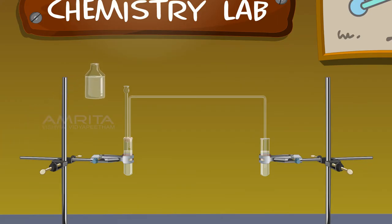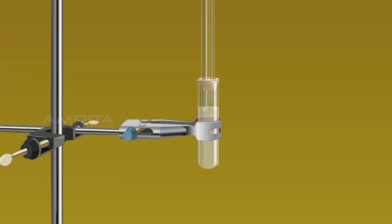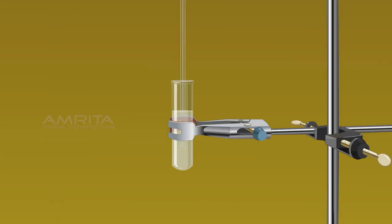Pour the acetic acid through the thistle funnel into the boiling tube containing sodium bicarbonate. A gas evolves. The lime water in the boiling tube turns milky. The gas evolved is CO2 which turns lime water milky.